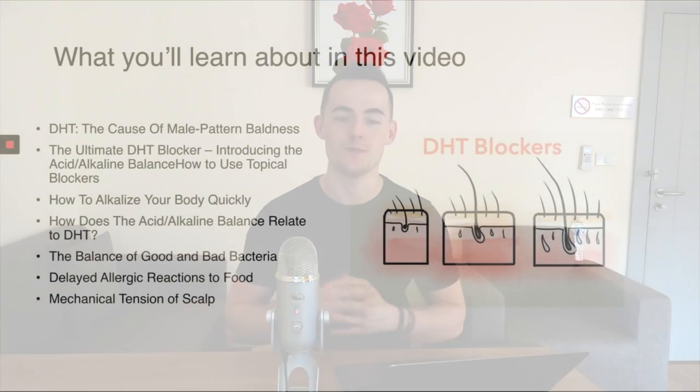Hey guys, Leon here from Hairguard. Today in this video we're going to be talking about the acid and alkaline solution and how that can help you block dihydrotestosterone or DHT, which can ultimately help you with male pattern baldness and androgenetic alopecia. This is part of a three-part mini series. We've already looked at the topical ways you can apply to your scalp to help combat hair loss, we've also looked at internal supplements, and now we're going to look at the most important one: the acid and alkaline solution.